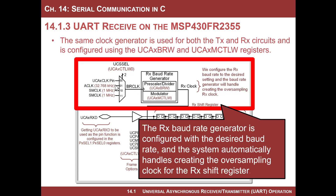Step one: set up the clock just like always. Decide on what baud rate you want to use, choose the clock source, set up the prescaler, and then set up the modulator. Remember, we're receiving — and I'll state it again — you don't have to worry about oversampling. It's all handled for you in the circuitry of the peripheral. So you just set it up to 115,200 or whatever baud rate you need.